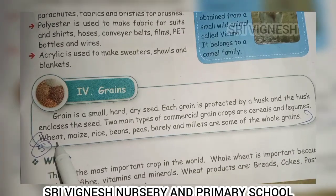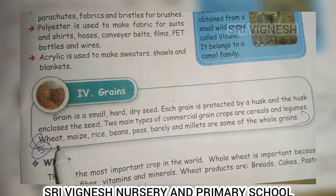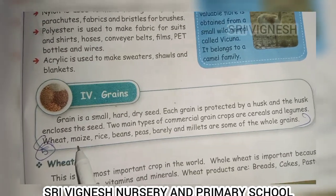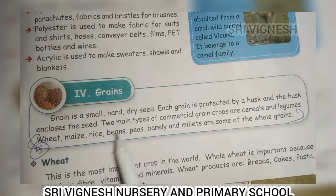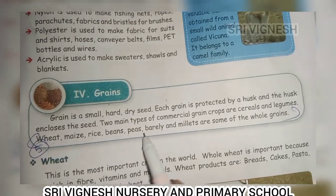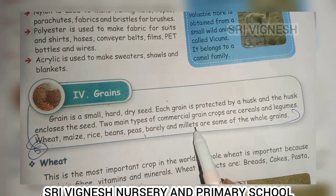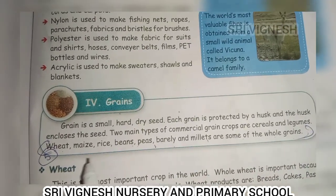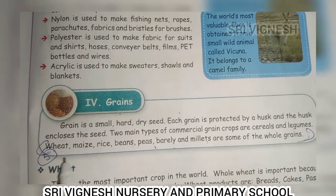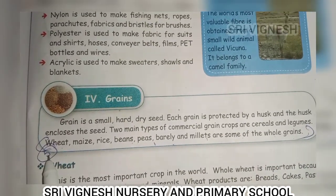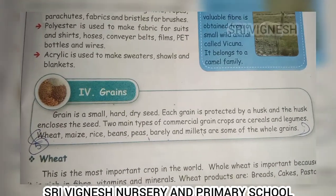Next one — name the list of all grains. The answer is on page 115. Wheat, maize, rice, beans, peas, barley and millets are some of the old grains.